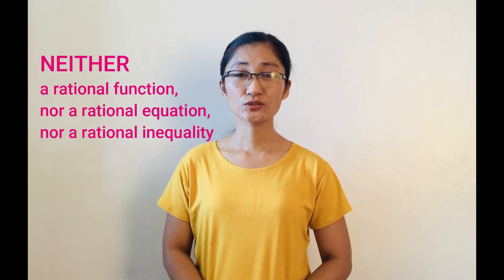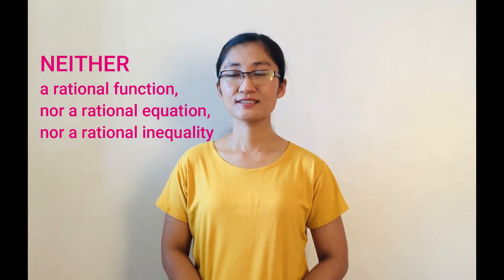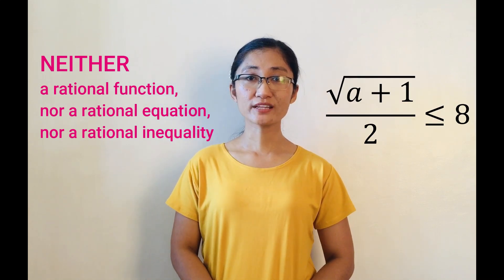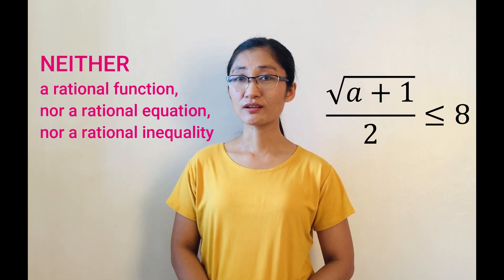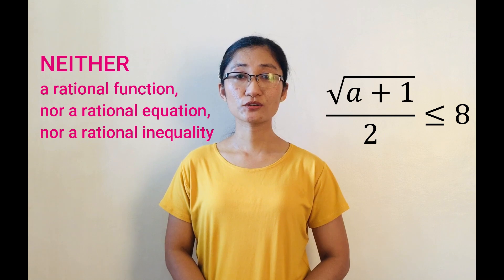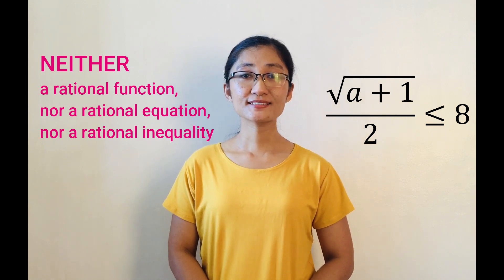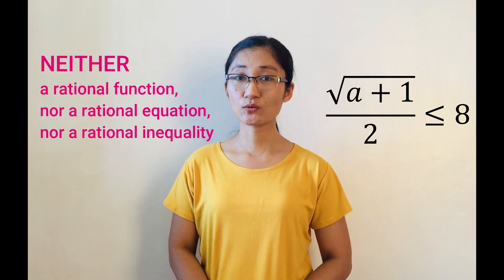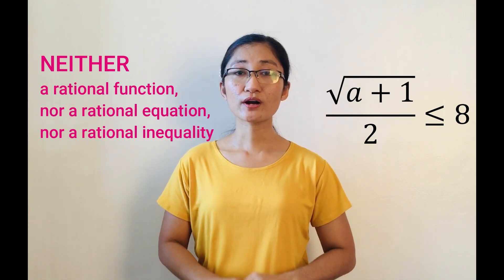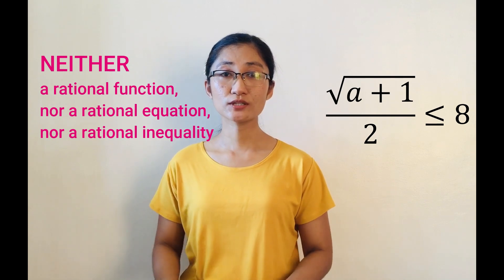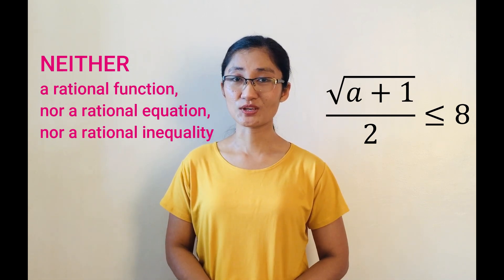If an equation or inequality has no rational expression, it is neither a rational function, rational equation, nor a rational inequality. Like in the case of √(a+1)/2 ≤ 8. It involves an inequality symbol, but the numerator √(a+1) is not a polynomial. Hence, it cannot be considered as a rational inequality. More so, it cannot be considered as a rational function, nor as a rational equation, since in the first place it is not an equation.